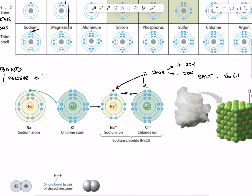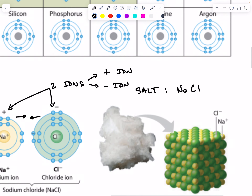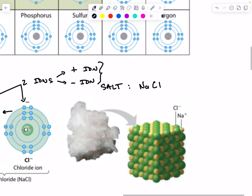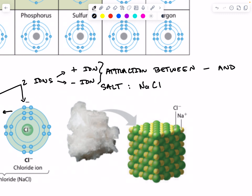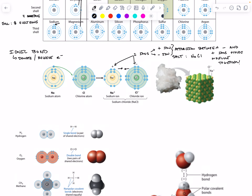If you have a positive ion and a negative ion next to each other, they are going to want to stick together, because positive likes to stick to negative. This attraction between the negative and positive ions holds this molecule together. That's an example of an ionic bond.